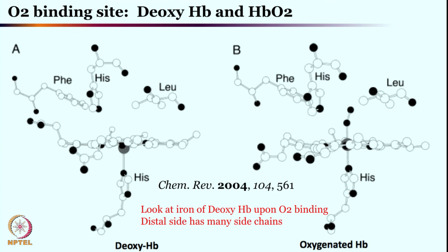Iron can act as the metal for the porphyrin center or protoporphyrin 9 center in case of hemoglobin and myoglobin, for keeping all of us alive. It can transport oxygen from the lungs to different parts of the body — and this is why our blood is also red. We have learned the intricacies of this chemistry.